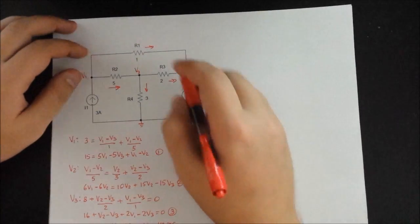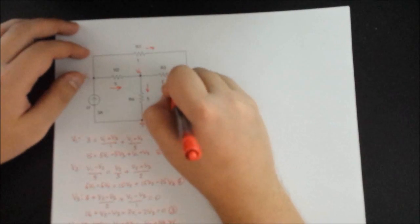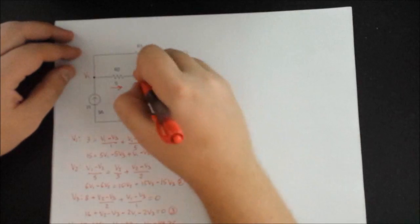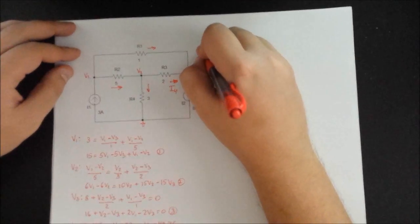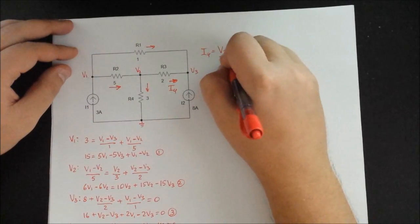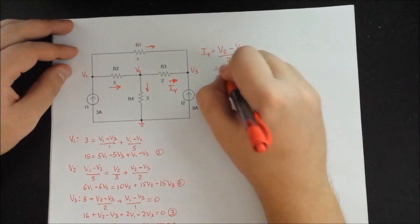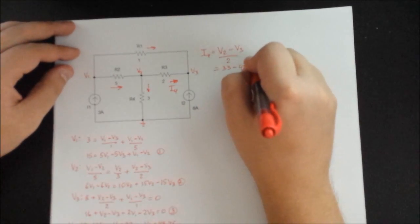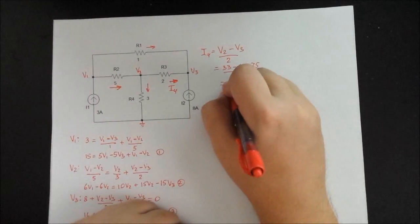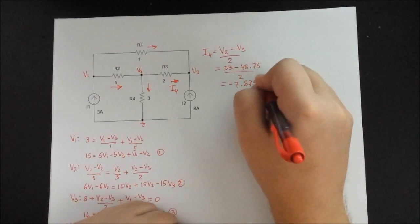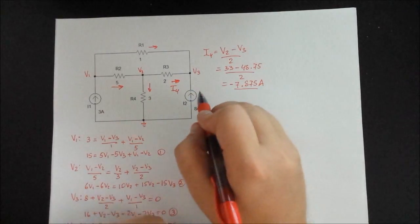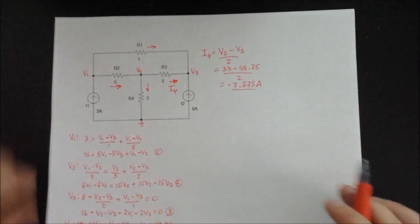And what does this all mean? Well basically if you get asked a question, what is the current I4, for example, which is this current, you can find it from the nodes. So in our case you know that I4 is equal to V2 minus V3 divided by the resistance, which is 2. So 33 minus 48.75V, you divide by 2, and what you get is actually a negative 7.875A.